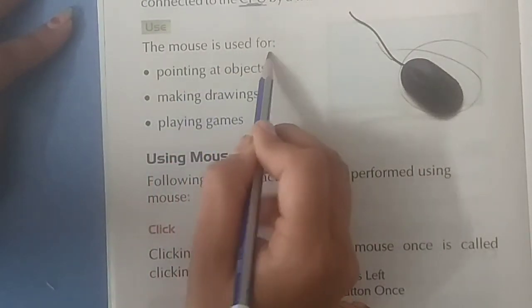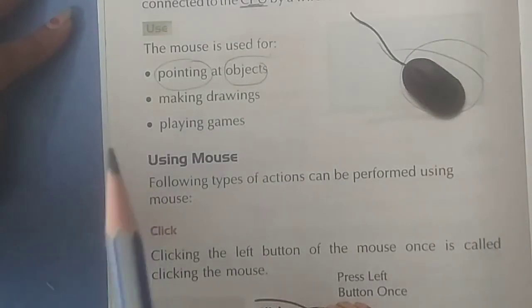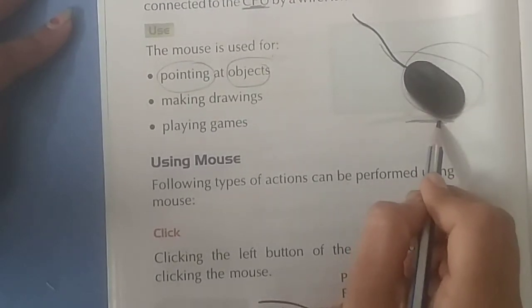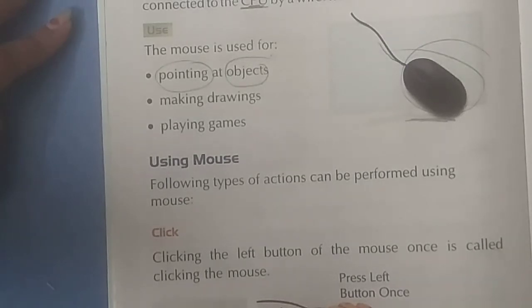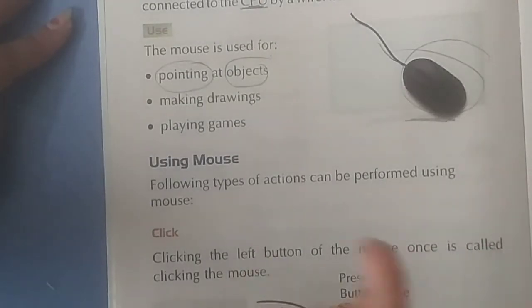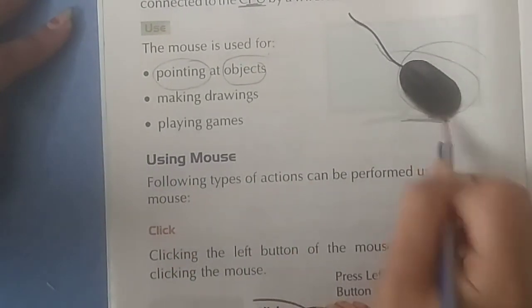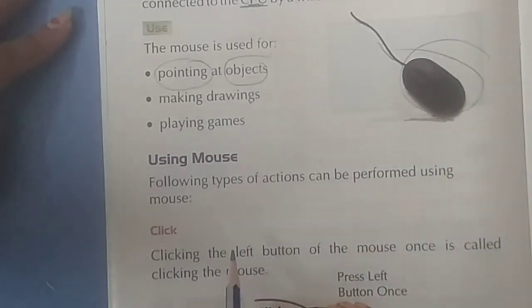The mouse is used for pointing at objects. To show certain things, to point at them — when I need to show a particular thing on the computer, we use the mouse. Just like when I explain at the board, I use a scale to point and show things — similarly, on the computer, the mouse is used. If you need to draw something, you click and draw it with the mouse. For playing games as well, we play using the mouse.